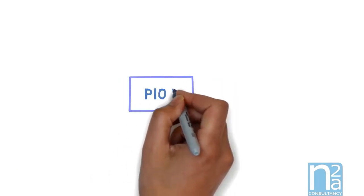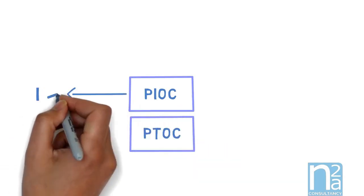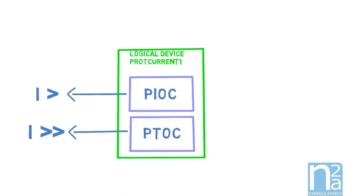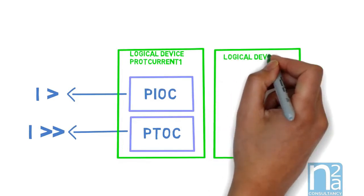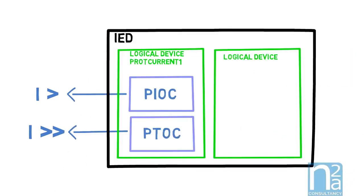IEC 61850 gives the possibility to group logical nodes into a logical device, but this choice is free. In this example, we have grouped instantaneous over-current and time over-current into a logical device we called prot-current 1. Last, we have the IED which groups the various logical devices implemented. This detailed definition must be followed to allow multi-vendor compatibility.